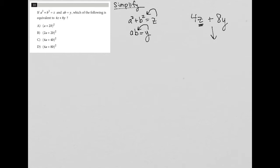So this 4z is going to turn into 4(a² + b²). And I'm going to replace this y with ab, because we were told that y = ab. So that 8y becomes 8ab.